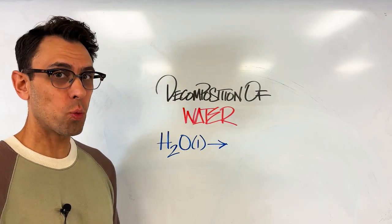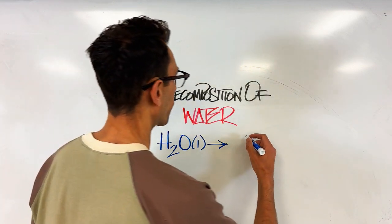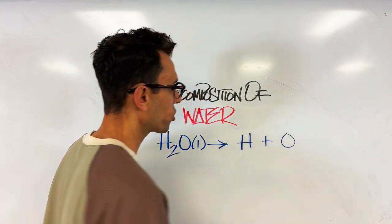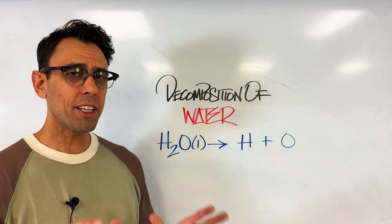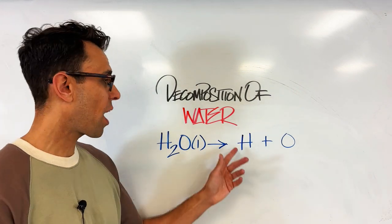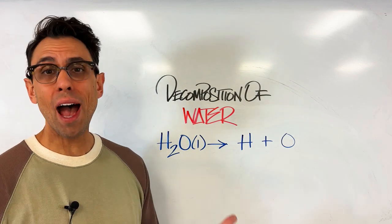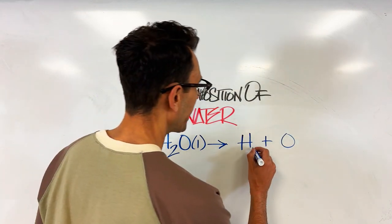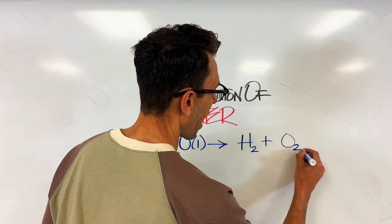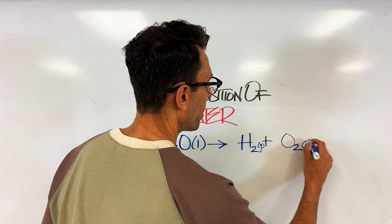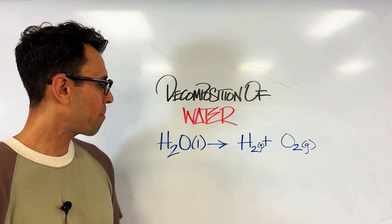What are we going to write as our products? Well, we're going to split these two elements apart from each other. So we'll have hydrogen and we'll also have oxygen. But let's be careful about how we write their symbols. You should know that both hydrogen and oxygen at room temperature are diatomic gases. So we're going to need to put a subscript of two after both of them. We're also going to need to add a G in parentheses to document the state of matter.